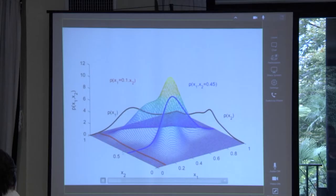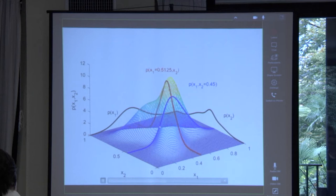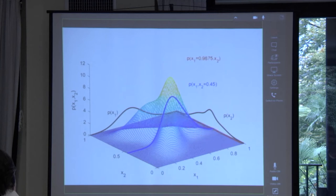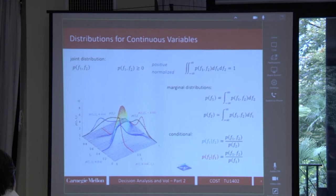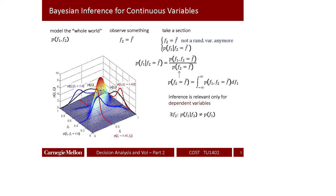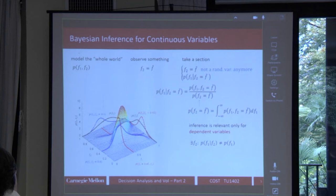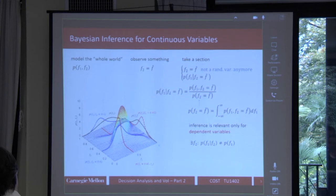This animation shows that when you observe different values of F1, you always get different updated beliefs on F2 — meaning the two random variables are dependent, and there is something to learn from one about the other. The general framework for inference is simple: start with a joint model, observe that F2 has a specific value, and use the conditional probability formula — take a section, renormalize — to get your updated belief. This is Bayesian inference in a nutshell.